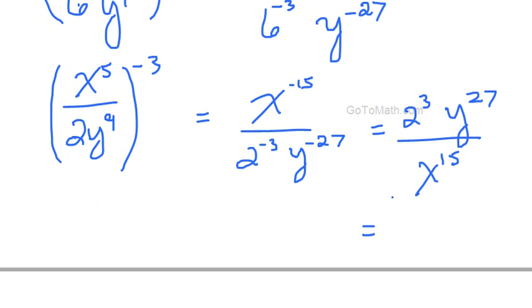So what is this? This is 2 to the 3rd. That's 2 times 2 is 4 times 2 is 8. Y to the 27th, and we've got this bar here which is kind of a nuisance, and then x to the 15th. So we'll do that.